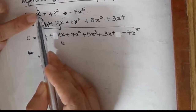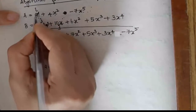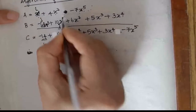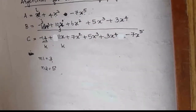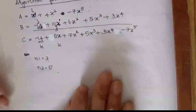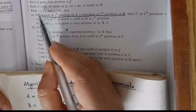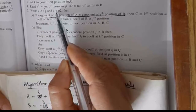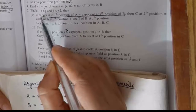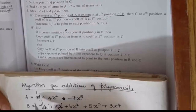Now check again: exponent position of i is x raised to 1, and exponent position of j is also x raised to 1. They are equal! So now we add the coefficients: 1 plus 10 equals 11. This becomes 11x. Then we increment i, j, and k.